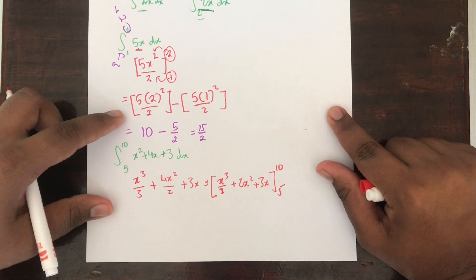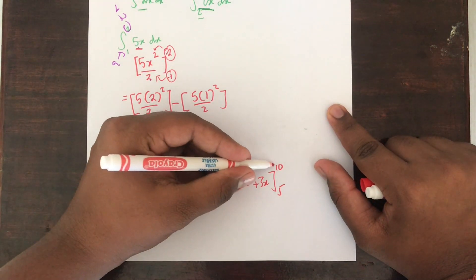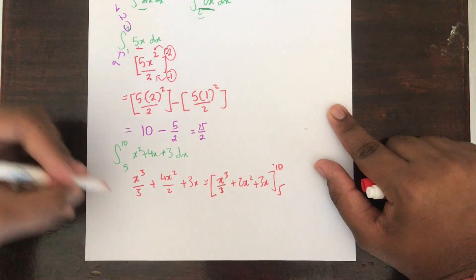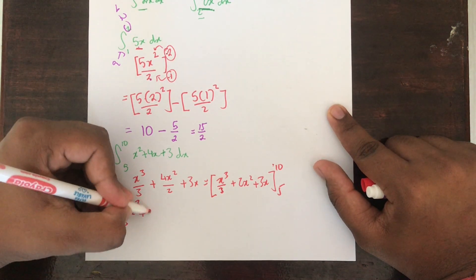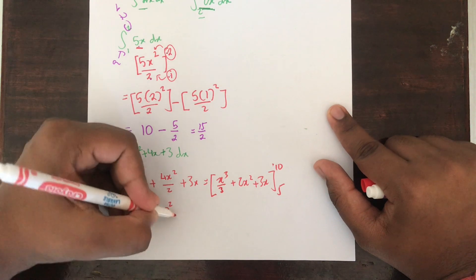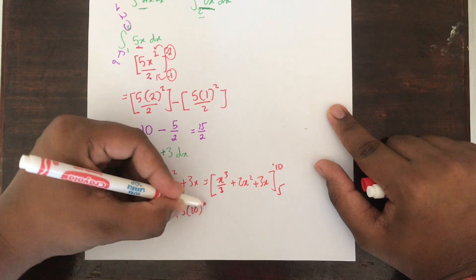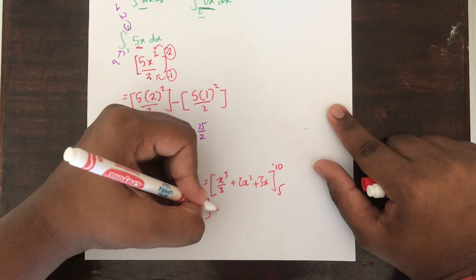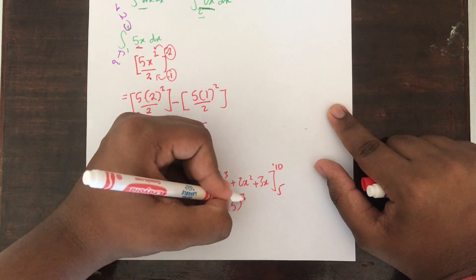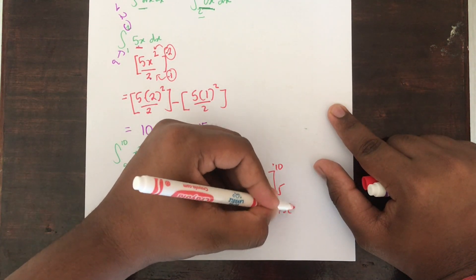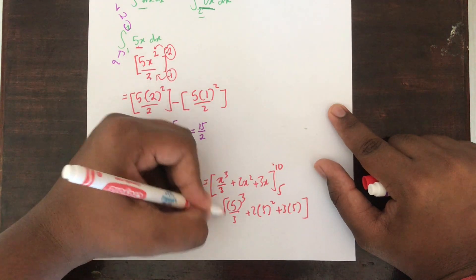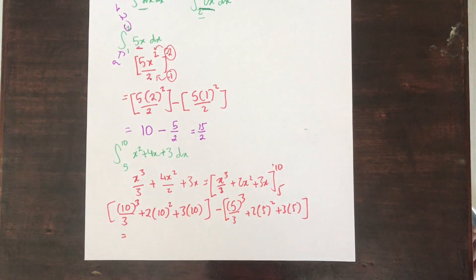Just do the normal way on how we learned earlier. Substitute these things into the function. That gives you 10 cubed divided by 3 plus 2 into 10 squared plus 3 into 10, minus 5 cubed over 3 plus 2 into 5 squared plus 3 into 5.